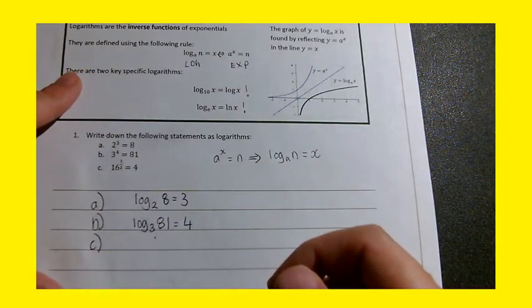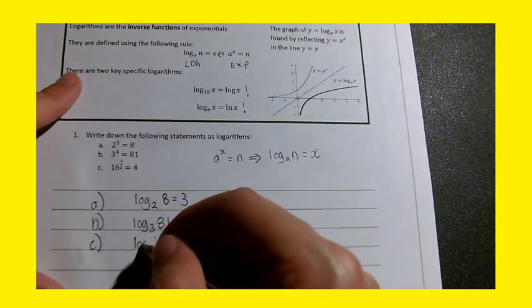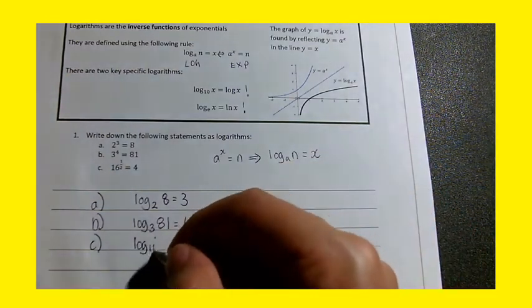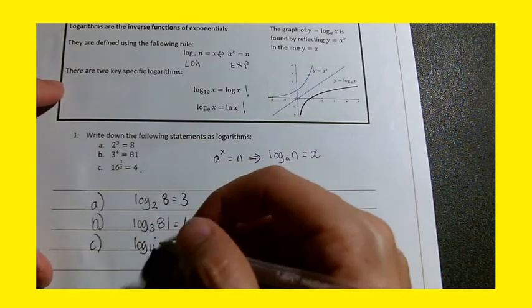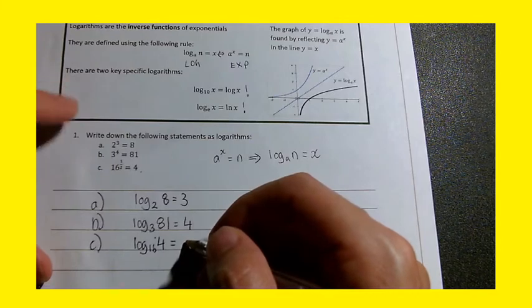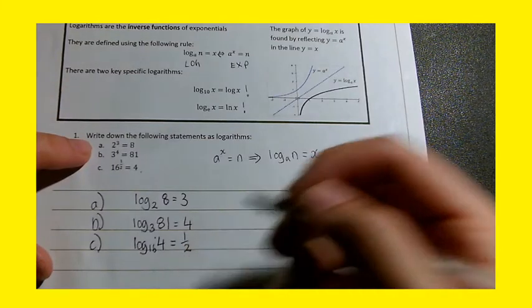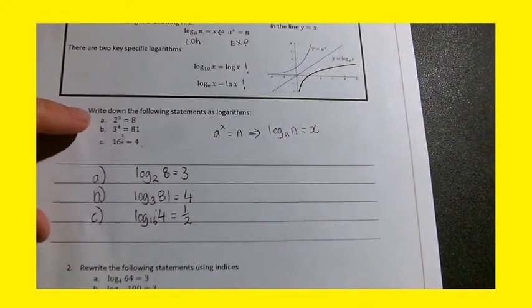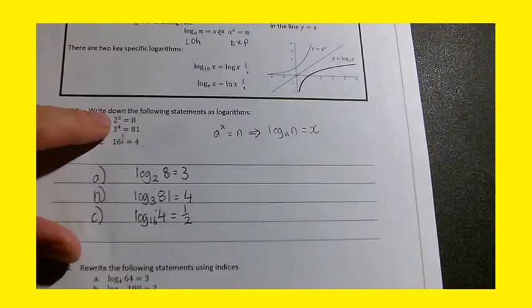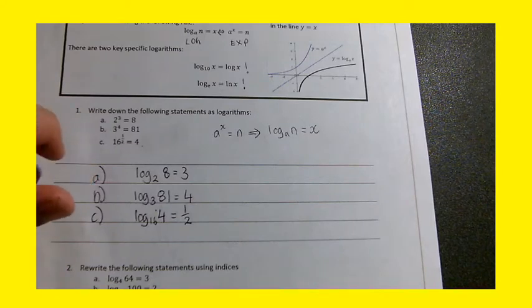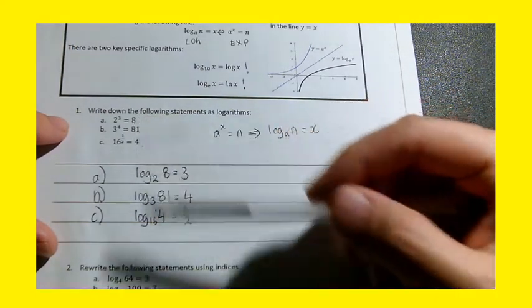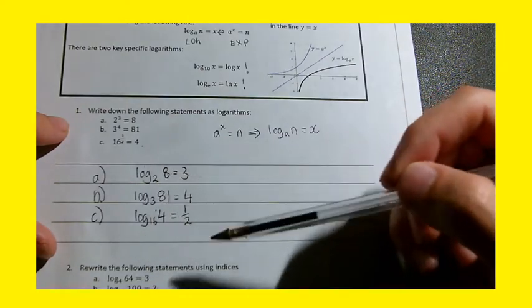Then you've got 16 to the power of a half equals 4. Again, what's your base? 16 to the power of a half. So you have log base 16. This 4 will go on the other side. And you've got half. Now, on its own, you might be thinking, well, what's so special about this? Why, what's so special about going from exponentials to logarithm form? Well, you'll see when we come to harder questions or solving, how powerful logs can be. But essentially, it's another way of rewriting or rearranging these expressions into something else.